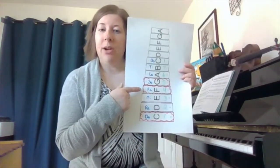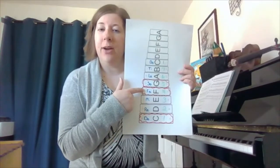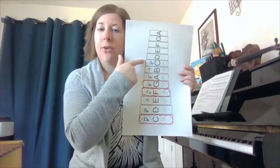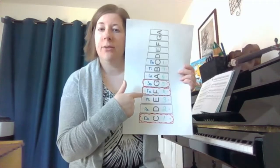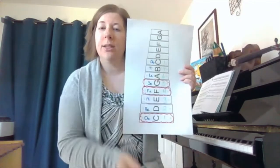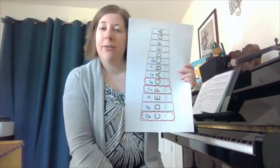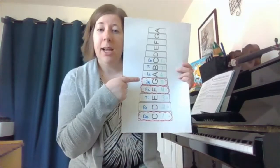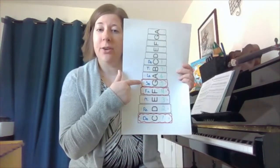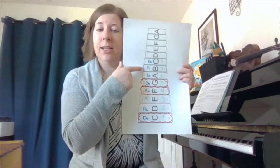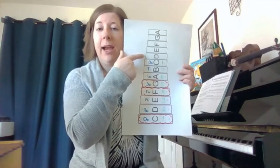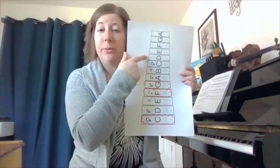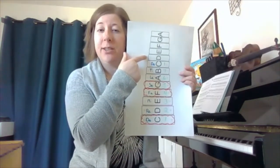If I want a fa chord, I have fa, la, do. Fa, la, do is a fa chord or a four chord. And then lastly, my so chord is so, ti, re. We know our solfege letters repeat once we get to do again.